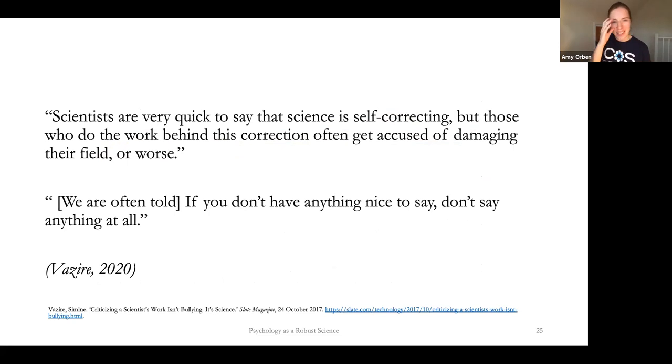This was, I think, about 10 years ago, but it even happening now in Slate magazine, Simine Vazire wrote in 2020 that scientists are very quick to say that science is self-correcting, but those who do the work behind this correction often get accused of damaging their field or worse. We are often told, if you don't have anything nice to say, don't say anything at all. So, again, we have this tension. Do we call out if we don't believe something is right and we go into something that seems like a conflict that goes against how we normally are told to act? Or do we call something out because that's what needs to be done to actually self-correct our science?